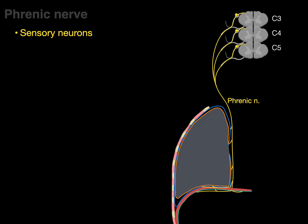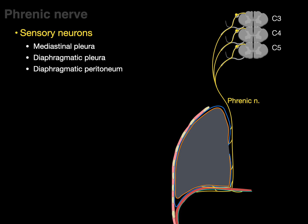The phrenic nerve receives somatic sensation — pain, temperature, touch, vibration, and proprioception — just like our skin, except it's inside the body. The mediastinal and diaphragmatic parietal pleura, the parietal pericardium, and the diaphragmatic parietal peritoneum all send somatic sensation via the phrenic nerve.